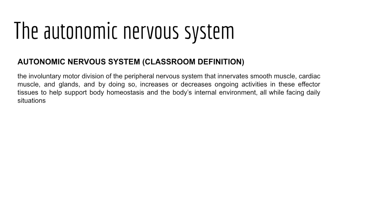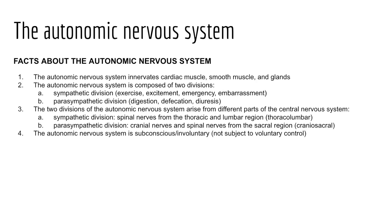Let's put all of these ideas together into a classroom definition of the autonomic nervous system. More broadly, the autonomic nervous system is a branch of the involuntary motor division of our peripheral nervous system. It's responsible for the innervation of effectors — smooth muscle, cardiac muscle, and glands — and with that innervation, we see an increase or decrease in the activities of these effector tissues to help support homeostasis while facing daily situations.